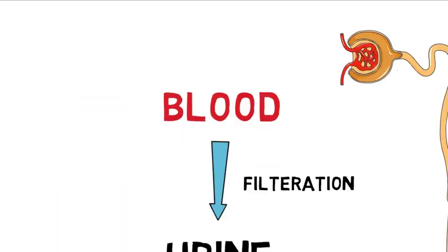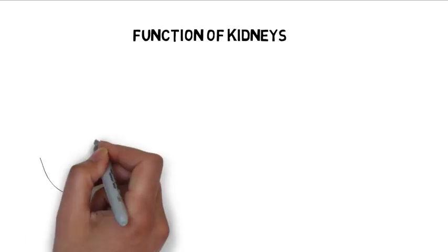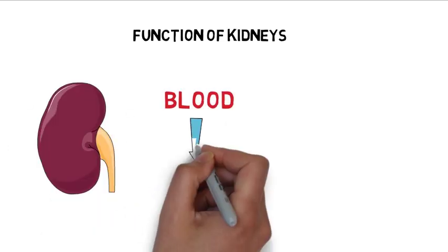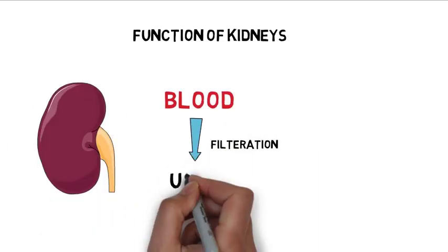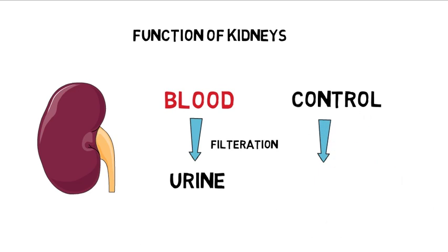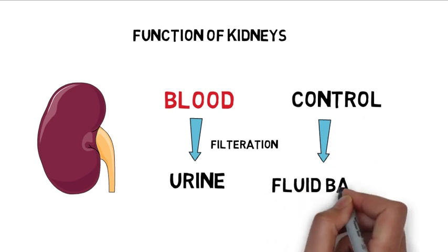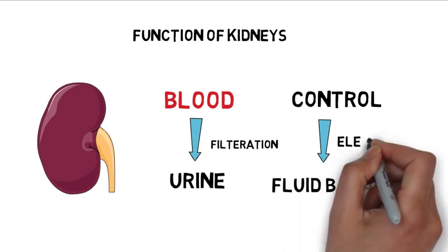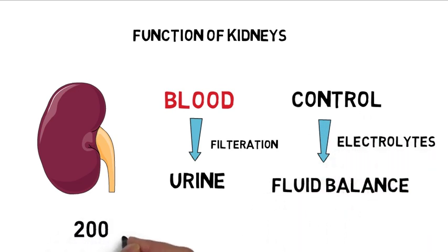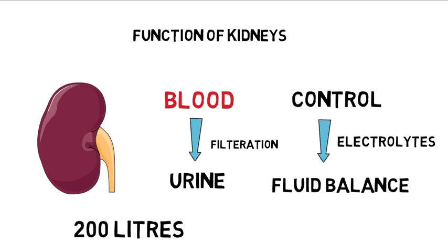Function of kidneys: Kidneys filter your blood, they remove waste from the body, and they control the fluid balance and keep the right level of electrolytes. Two kidneys filter about 200 liters of fluid every 24 hours.